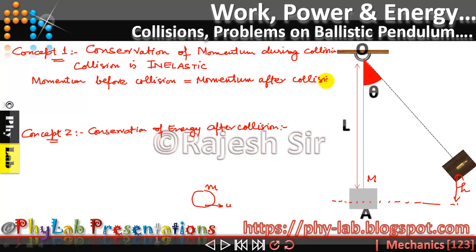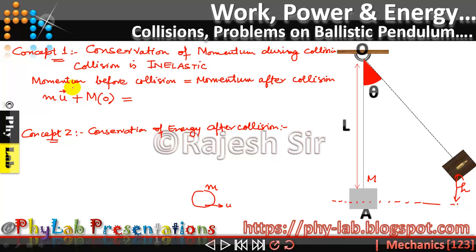Before the collision there were two separate systems. The bullet had mass m and was moving with initial velocity u. The block was suspended and was at rest, so its momentum was mass into zero. Together, the momentum before collision is m×u. Remember, momentum is a vector quantity, so I'm putting an arrow on the initial velocity to indicate it is a vector.